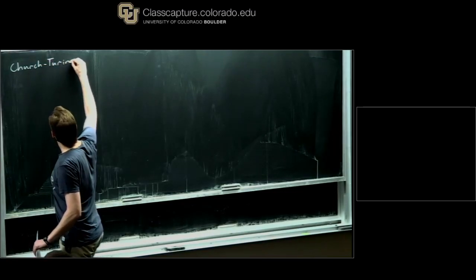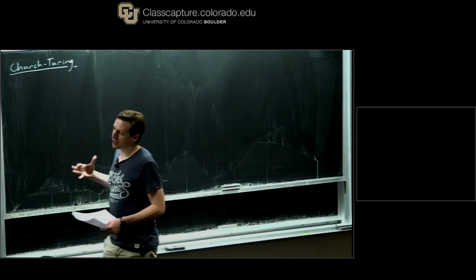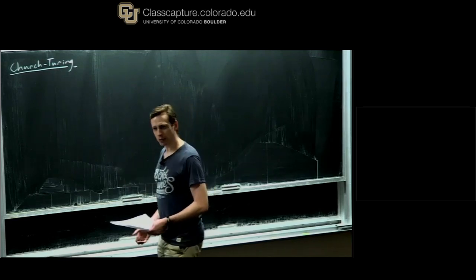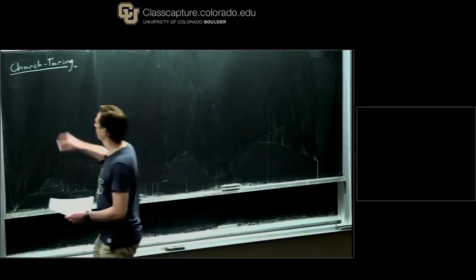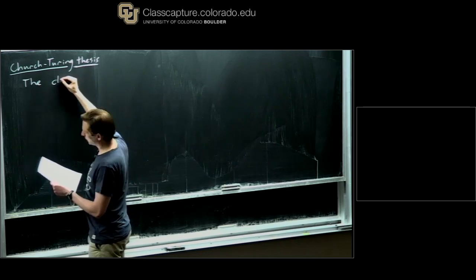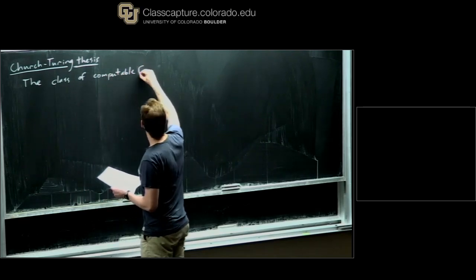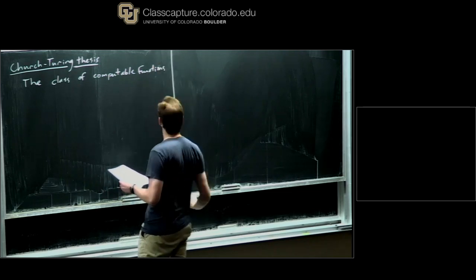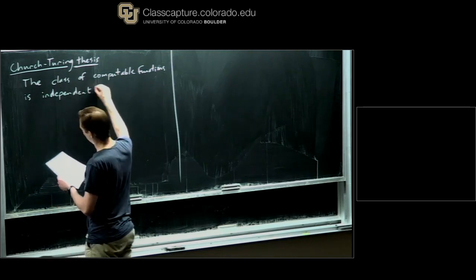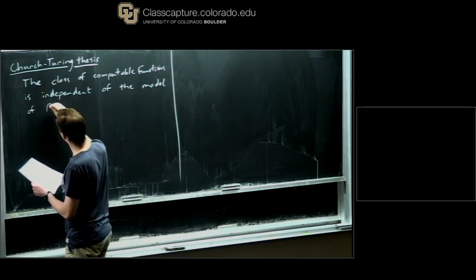The Church-Turing thesis gives us confidence that this model Turing came up with for computation turns out to be a very convenient and very nice model to work with theoretically. It's a horrendous pain to actually program a Turing machine, but as long as we just have to prove theorems about what a Turing machine does, it's a very elegant model of computation. The thesis states that the class of computable functions is independent of the model of computation we choose, for all reasonable models of computation.